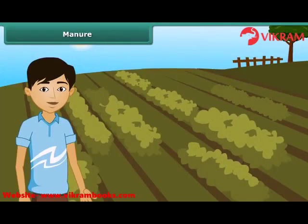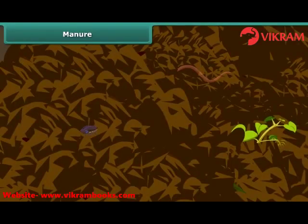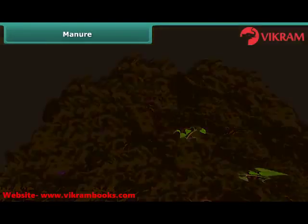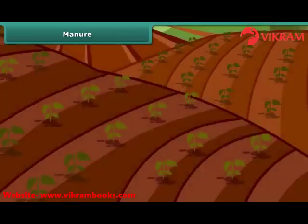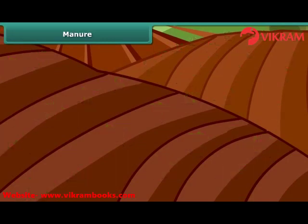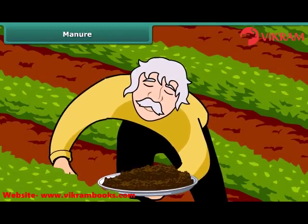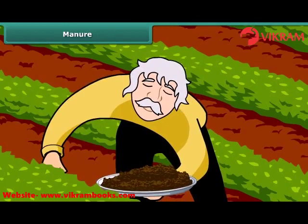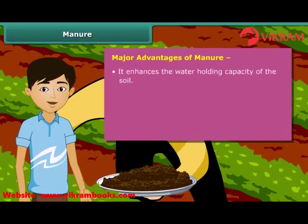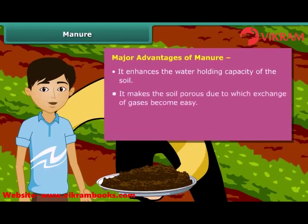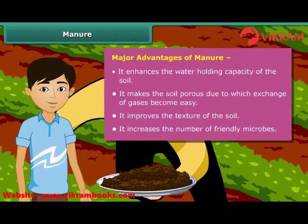Friends, now let us move on to manure. Manure is an organic substance obtained from the decomposition of plant and animal wastes. To make it, farmers dump plant and animal wastes in pits at open places where it is decomposed by microorganisms. Soil fertility and nutrients are reduced due to repeated cultivation of crops year after year. Farmers therefore add manure to the fields to replenish the soil with nutrients. This process is called manuring. Manure enhances the water holding capacity of the soil, makes the soil porous so exchange of gases becomes easy, improves the texture of the soil, and increases the number of friendly microbes necessary for a healthy crop.